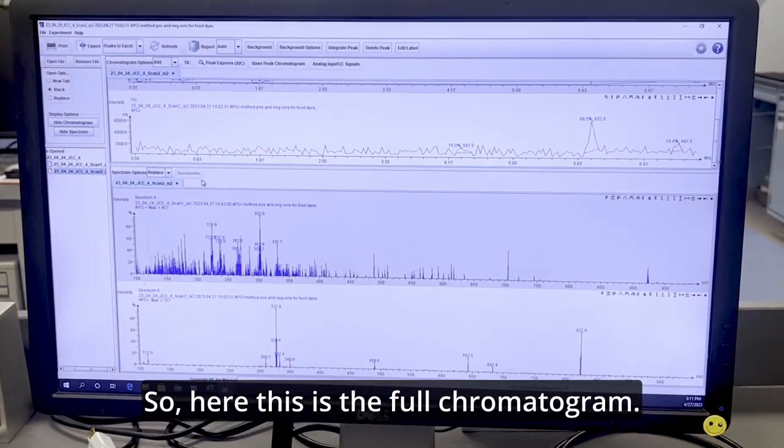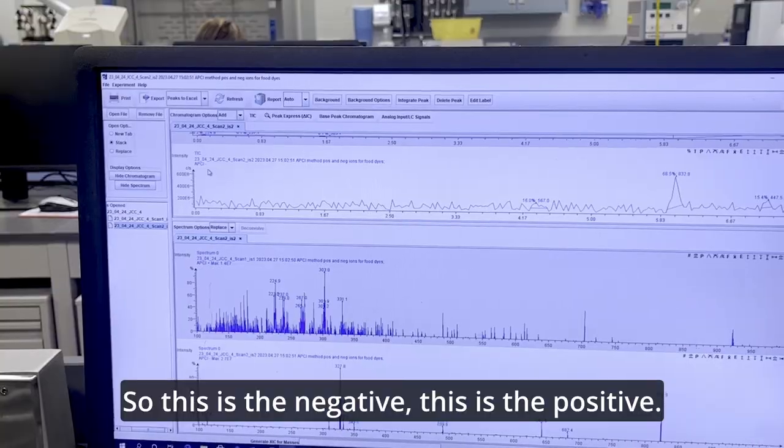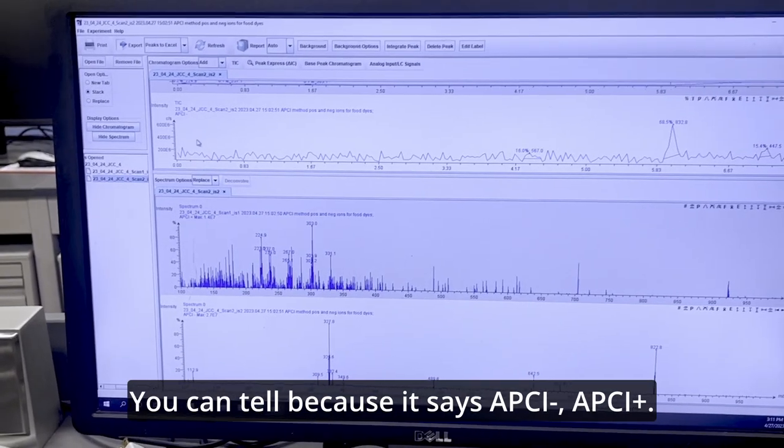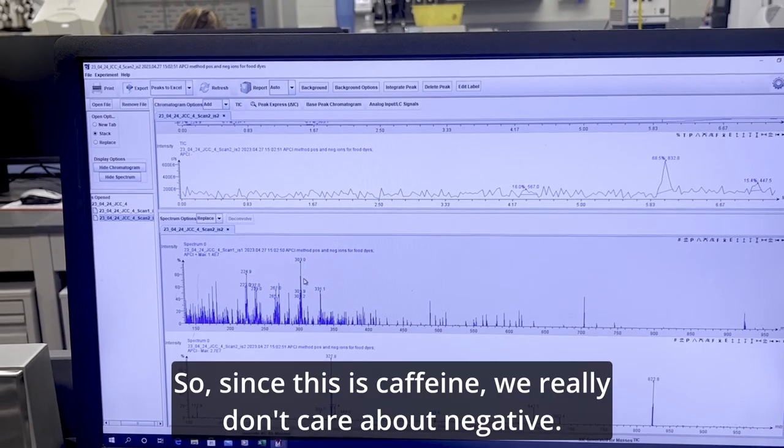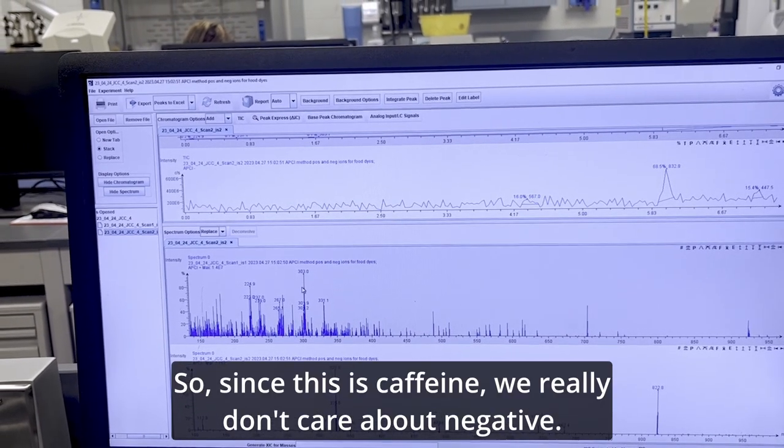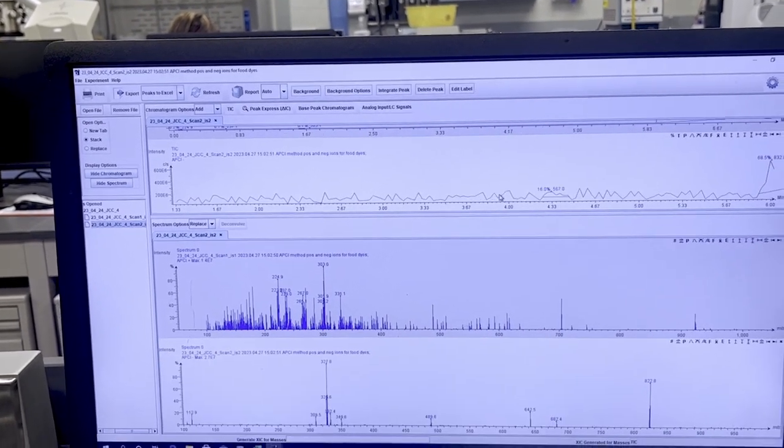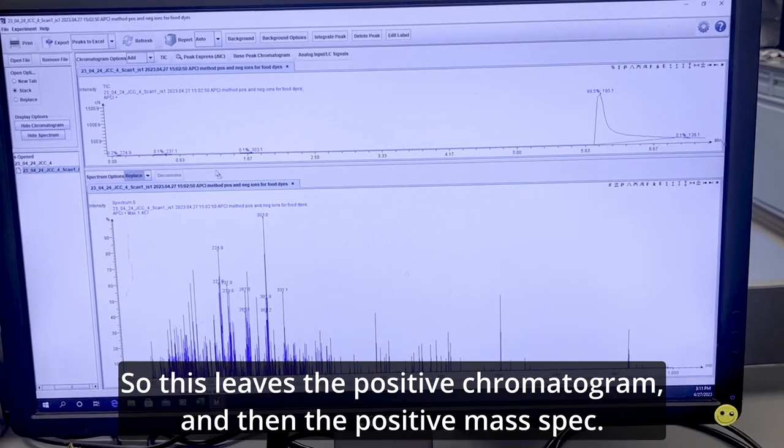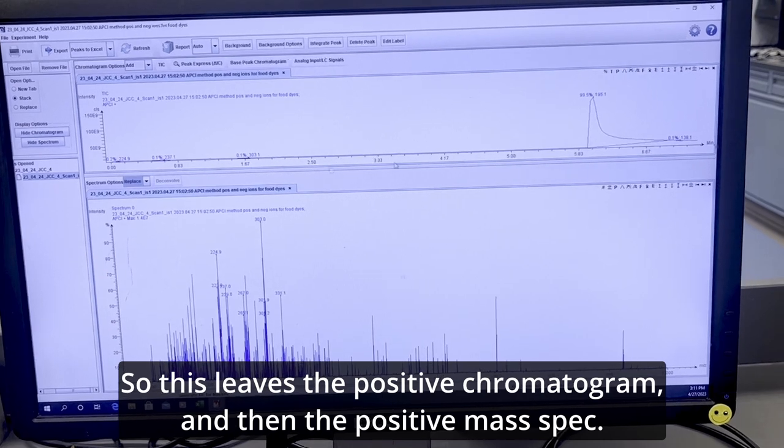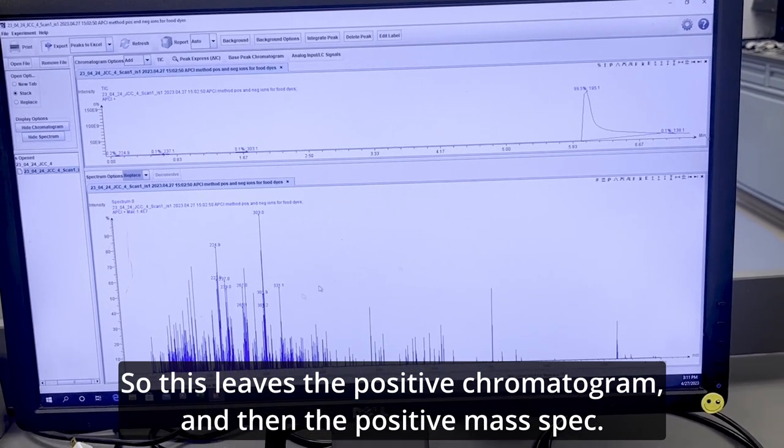So here, this is the full chromatogram. So this is the negative. This is the positive. You can tell because it says APCI negative, APCI positive. So since this is caffeine, we really don't care about negative. So we're just going to X out of what says negative. So this leaves the positive chromatogram and then the positive mass spec.